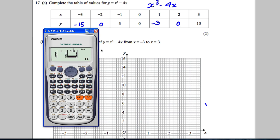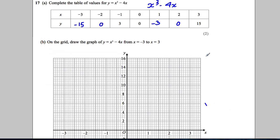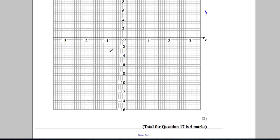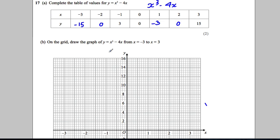There's your table: -3, -15; -2, 0; -1, 3; 0, 0; 1, -3; 2, 0; and 3, 15. Very useful for you. So now we're asked to draw that graph on here. All we've got to do is plot the points.